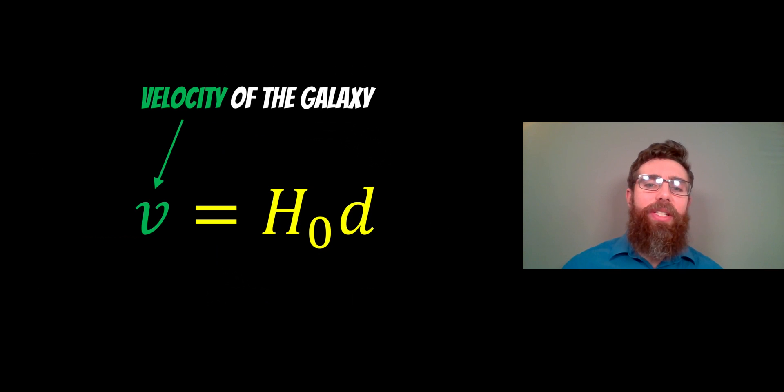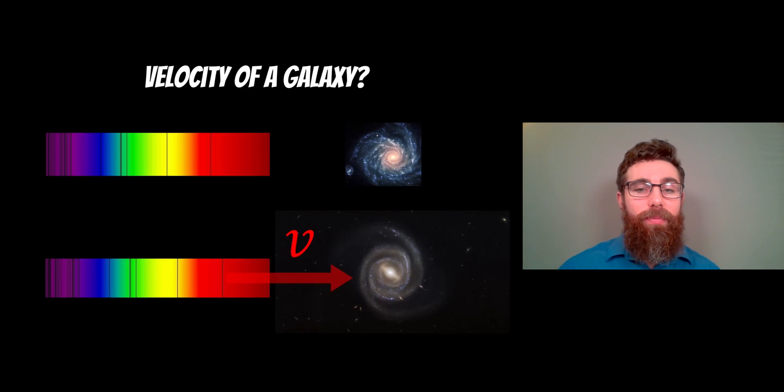If we've got the distances to our galaxies in some way or another, we then need the velocity of the galaxy. In this equation here, v represents the velocity that the galaxy is moving with respect to us. Now, how do we do that? Well, this top galaxy is not moving with respect to us, and its spectrum of light is not shifted in any way.